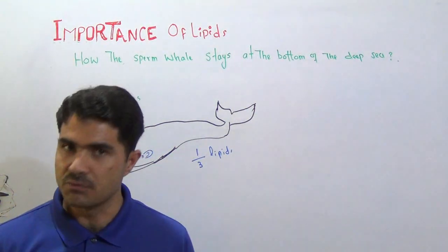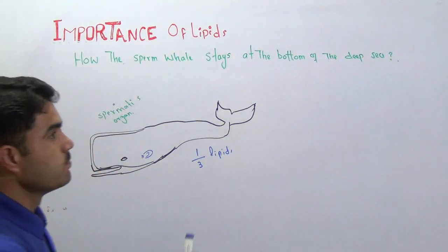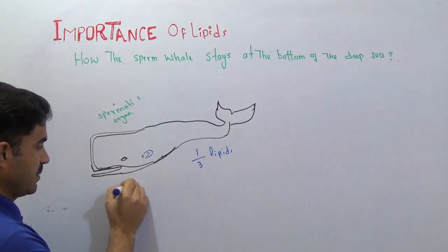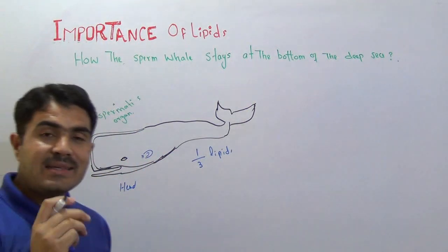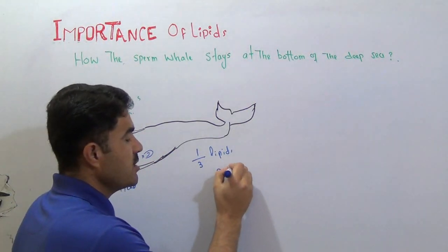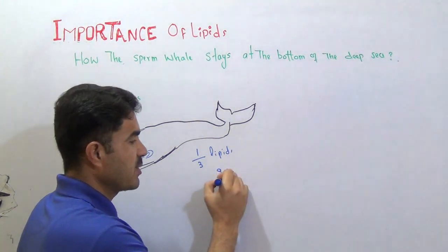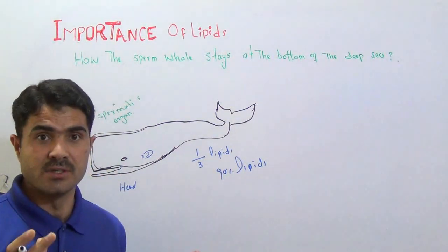Today I'm going to discuss it with you people that there is one third means there are 3000, especially if you take the head, this is the head portion, especially the head. The head region in its head. You will find 90% lipids. There is 90% lipids. 90% lipids in the head region.